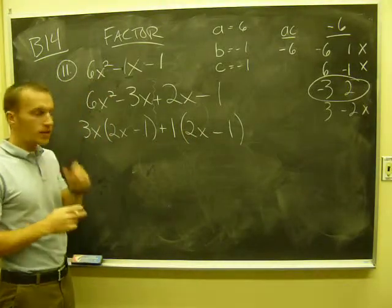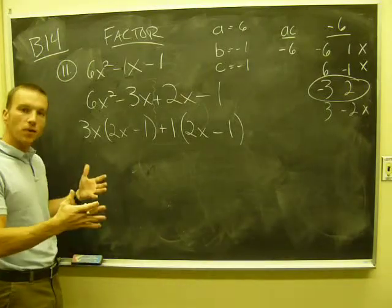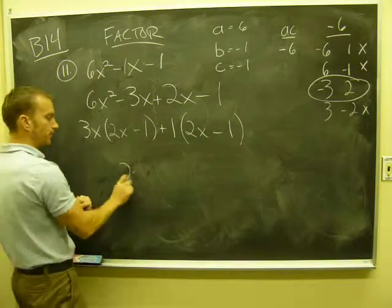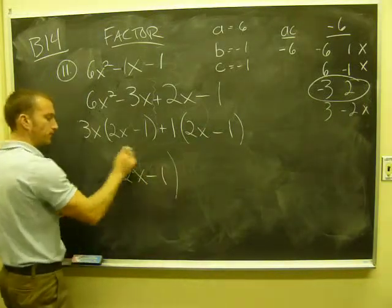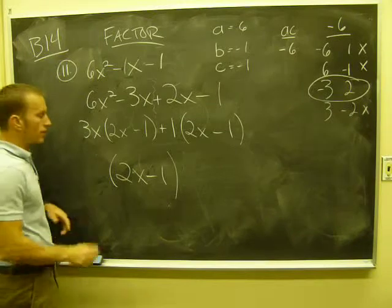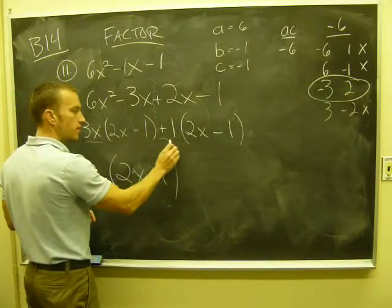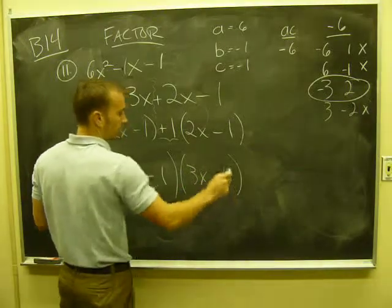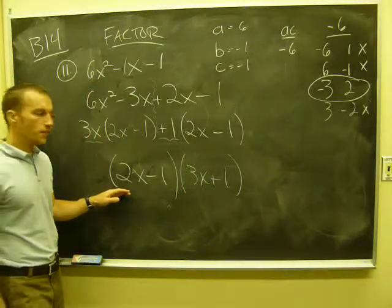Okay, the next step, or one step away from the answer, is to pull out the 2x minus 1. If I factor that out, what are you left with? What's on the outside here, including that sign? 3x plus 1. And that's my answer.